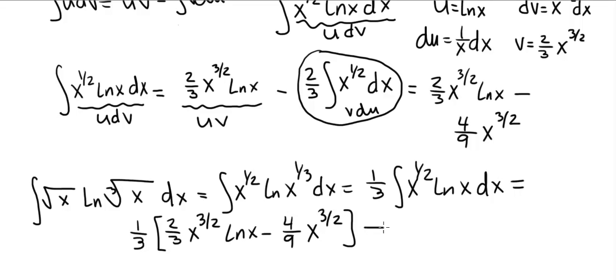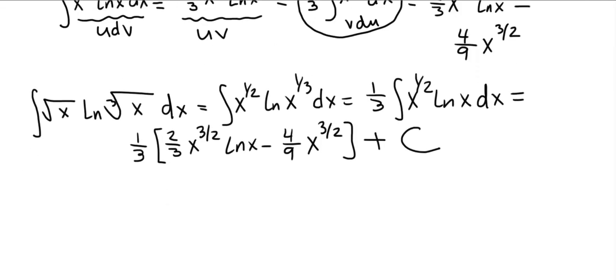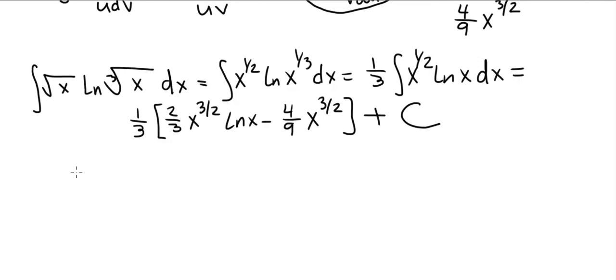And then we can add, after all that, we can add a c at the end. You don't have to multiply c by one-third because it's a constant. We can just rename it something else. So c is added at the end. And so the final answer would be two-thirds times one-third. Two over nine x to the three-halves ln of x. And then one-third times four over nine is four over 27 x to the three-halves plus c.